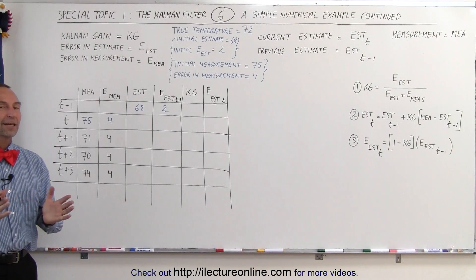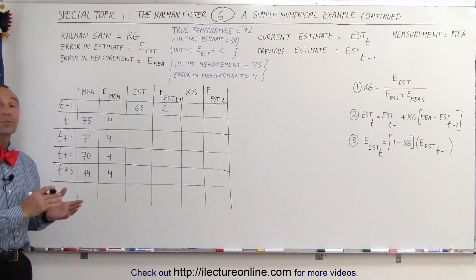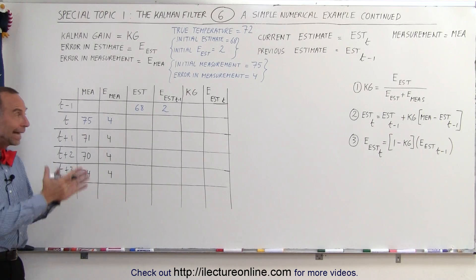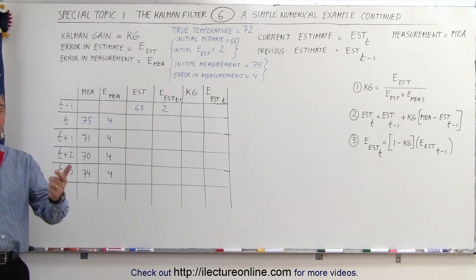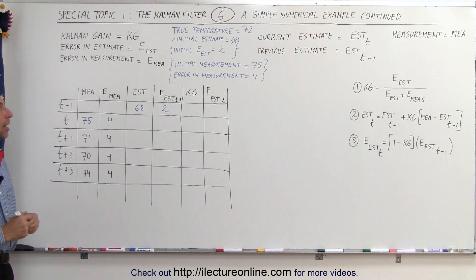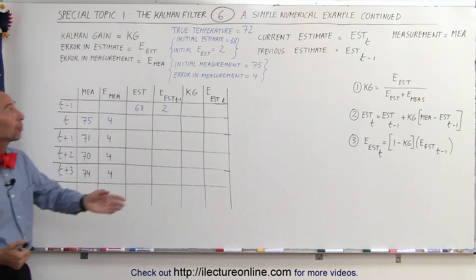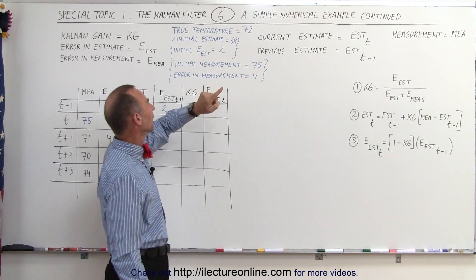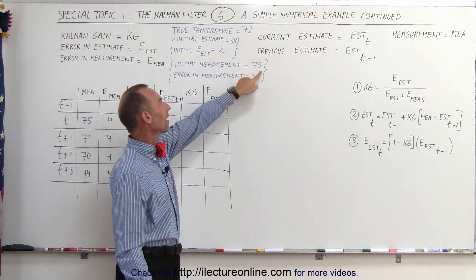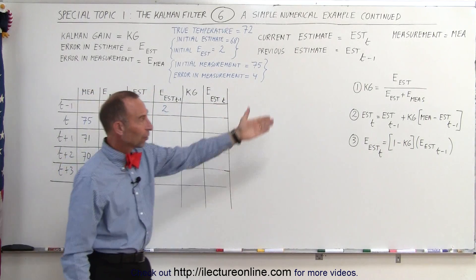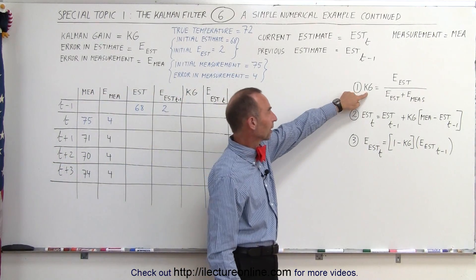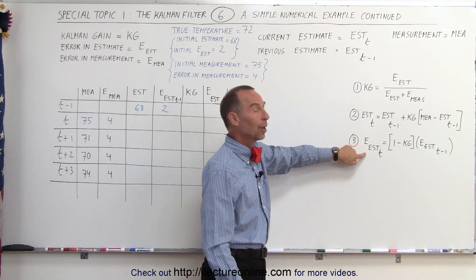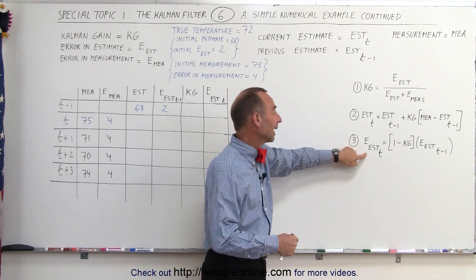Welcome to Electron Online. Nothing like some good examples to show you how Kalman filtering works, so we're going to take the previous example from the previous video and carry it on a few steps further to see how the iterative process works for Kalman filtering. The true temperature was 72 degrees, our initial estimate was 68 with an error of 2, and the initial measurement was 75 with an error of 4. We have three equations: one to calculate the Kalman gain, one to calculate the current estimate, and one to calculate the updated error estimate.